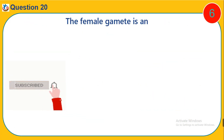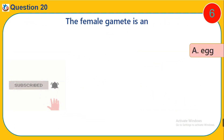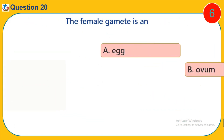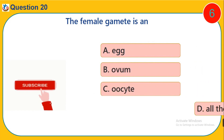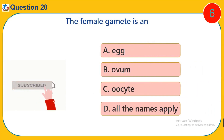Question 20. The female gamete is an. A. Egg. B. Ovum. C. Oocyte. D. All the names apply.